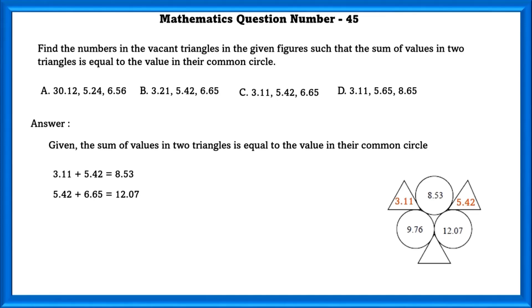Then, if we take the bottom triangle as 6.65, adding 5.42 and 6.65, we can get the value that is 12.07. Similarly, adding 3.11 and 6.65, we will get 9.76. The values of the vacant triangles is correct in the option C.